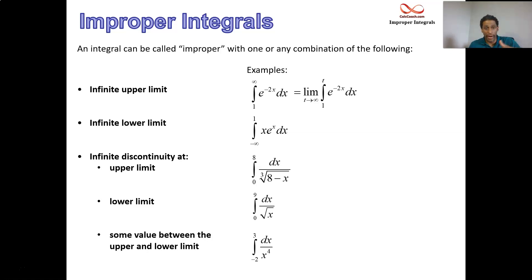So you let a variable replace wherever your infinite limit is, and then you let that variable approach that. In the second one, we're going to let t approach negative infinity and replace the lower limit with a t.